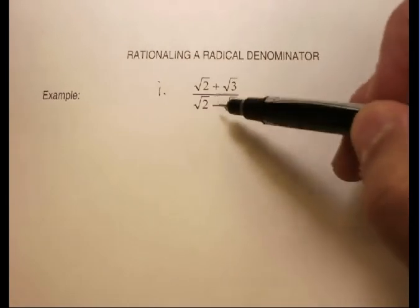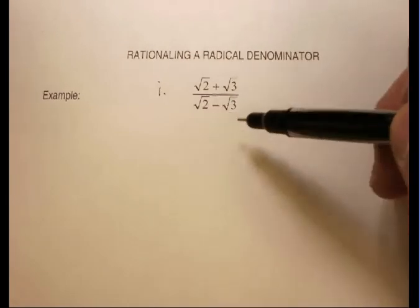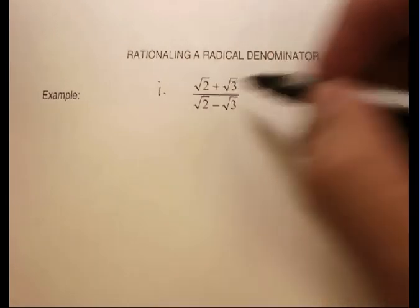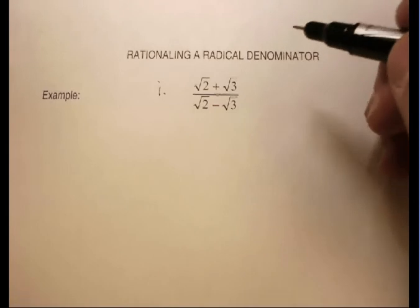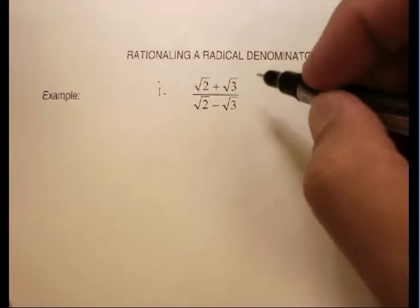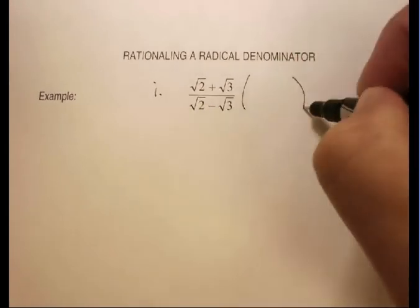I see that I have a binomial that has two radicals in the denominator, and I also have a numerator that has two radicals. It's also a binomial. That really doesn't change my procedure, though.